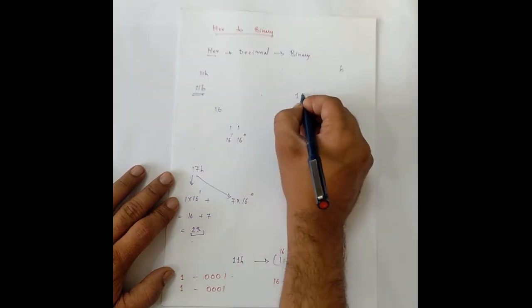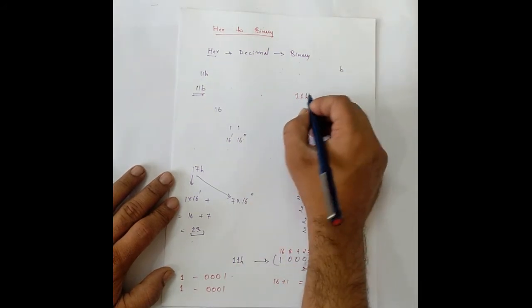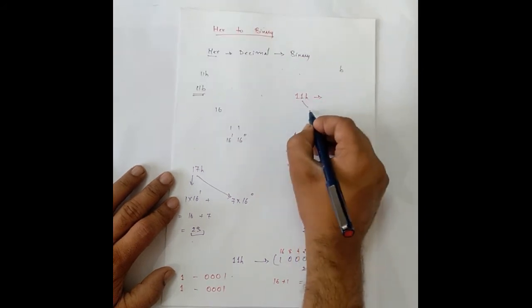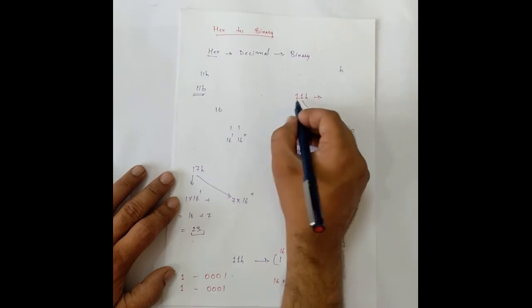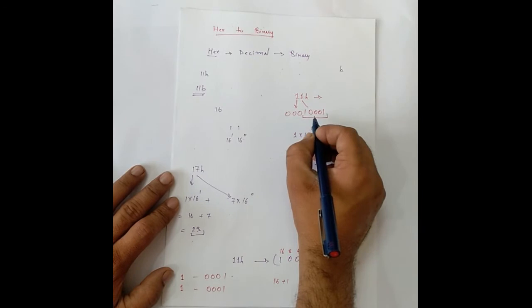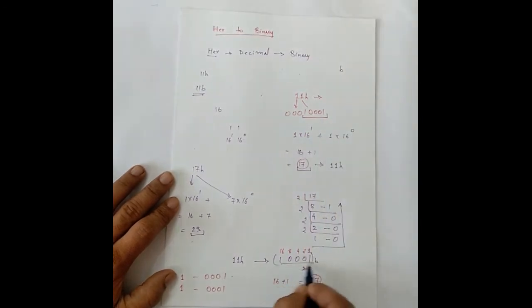So, 11h in hexadecimal gives us, we take the binary of this. This is 0 0 0 1 and the binary of this 0 0 0 1. That gives us total 1 0 0 0 0 1 which is this.